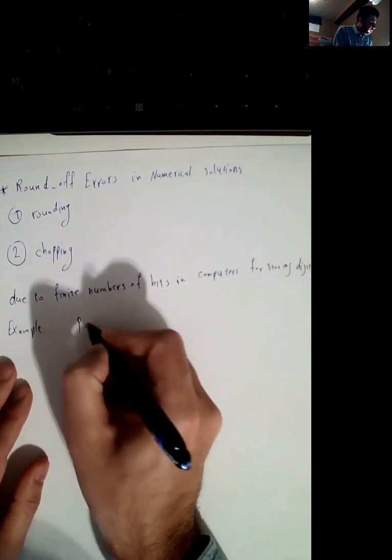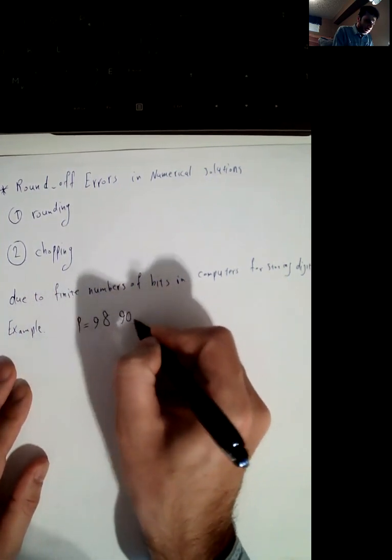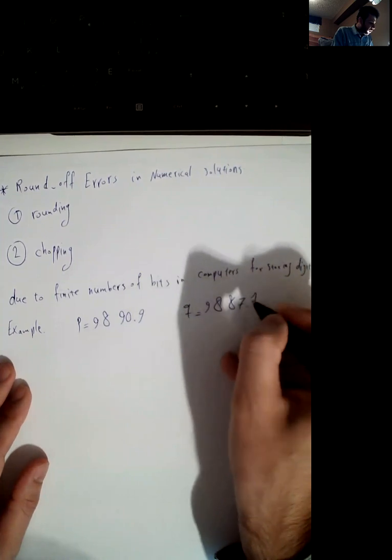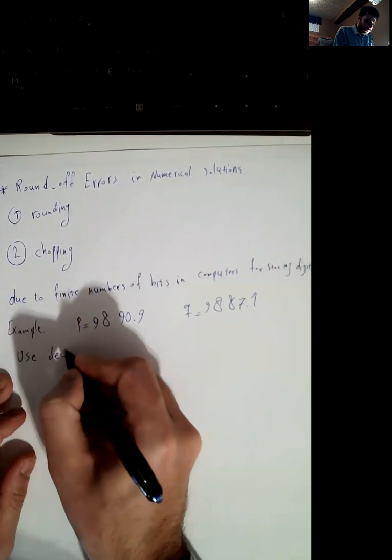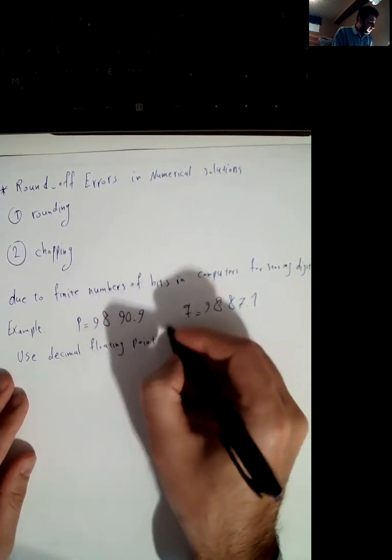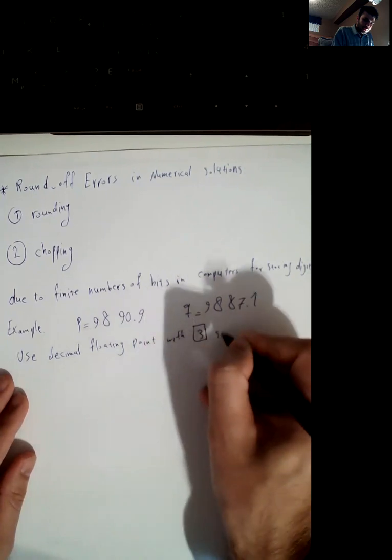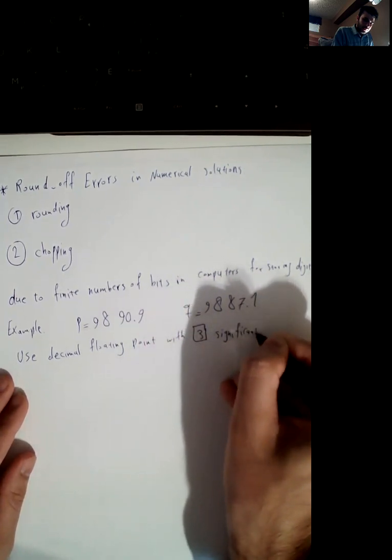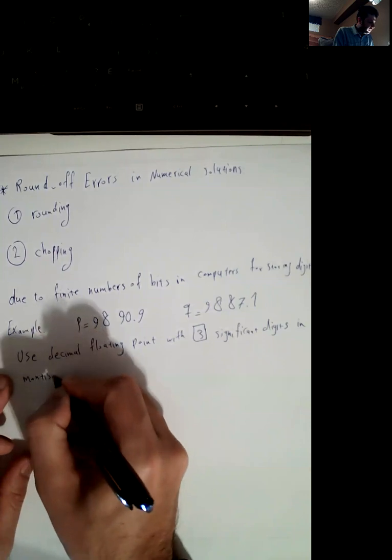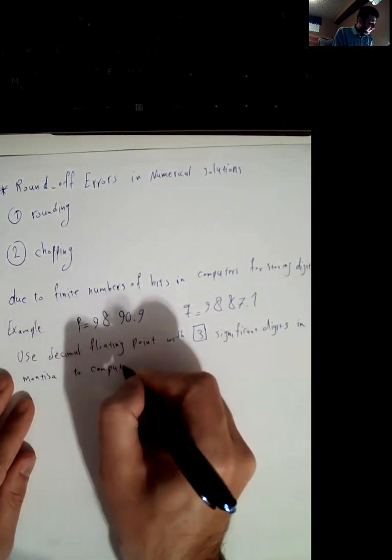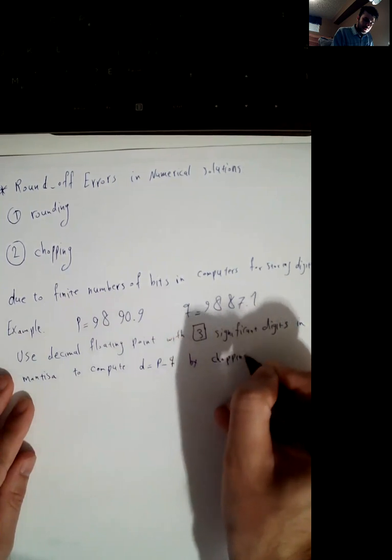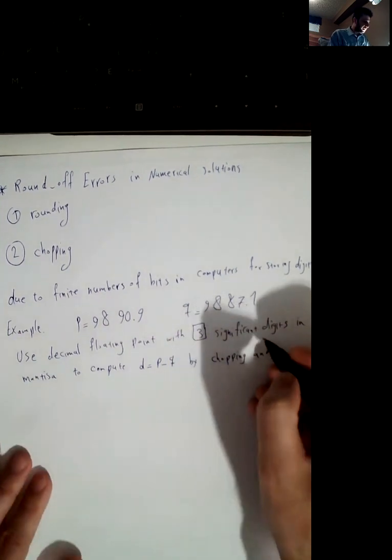So let's assume we have p equals 9890.9 and q is 9887.1. So the question is: use decimal floating point with three significant digits in mantissa to compute p minus q by chopping and rounding.